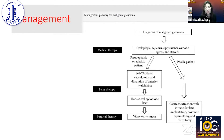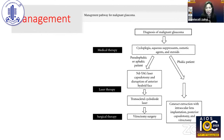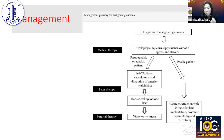Management follows the stepwise approach: medical therapy, then laser, then surgical. For medical therapy, you want to dilate the pupil, relax the zonules so the lens moves backwards, use aqueous suppressants, and use osmotic agents — such as oral glycerol or mannitol — which shrink the vitreous.